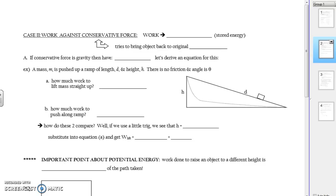So the first case we want to do is work against a conservative force. A conservative force, not a political conservative, but it's any force that tries to bring the object back to its original position. There are two such forces that we're going to look at. One force is when you do work against gravity, in other words by lifting something up. Gravity wants to bring it back down. Another one is when you do work against springs. If you stretch or compress a spring, the spring will go back to its original position when you let it go.